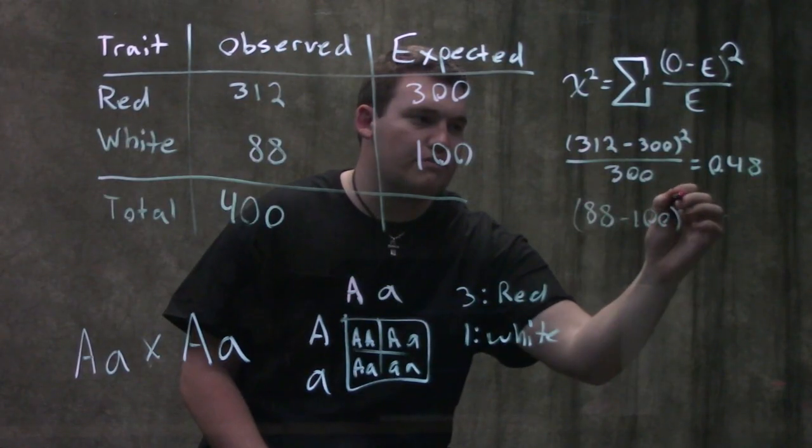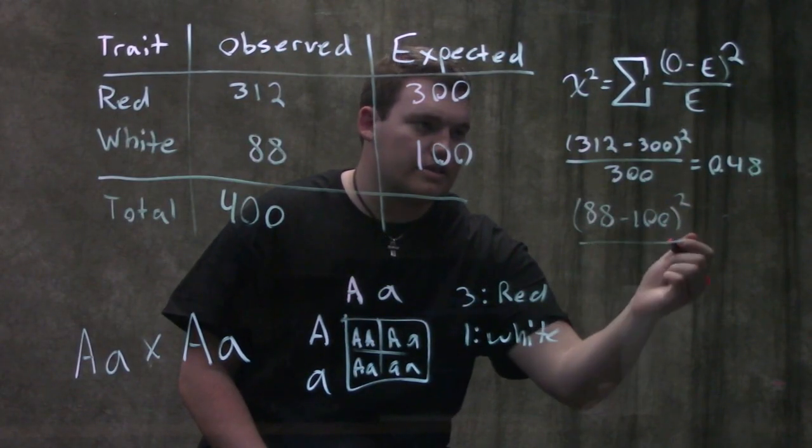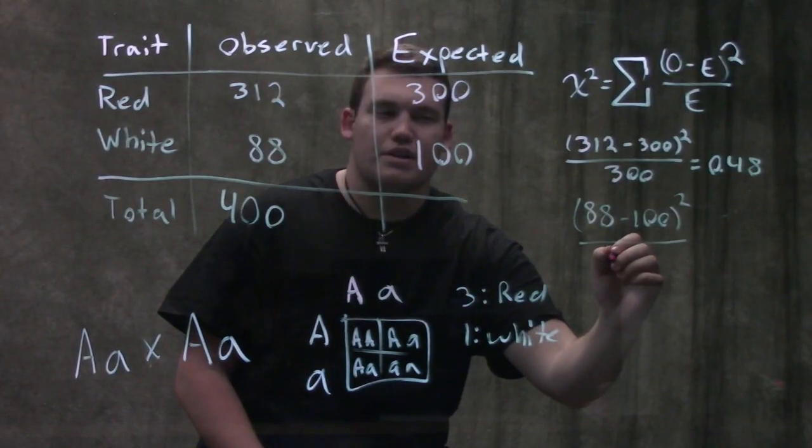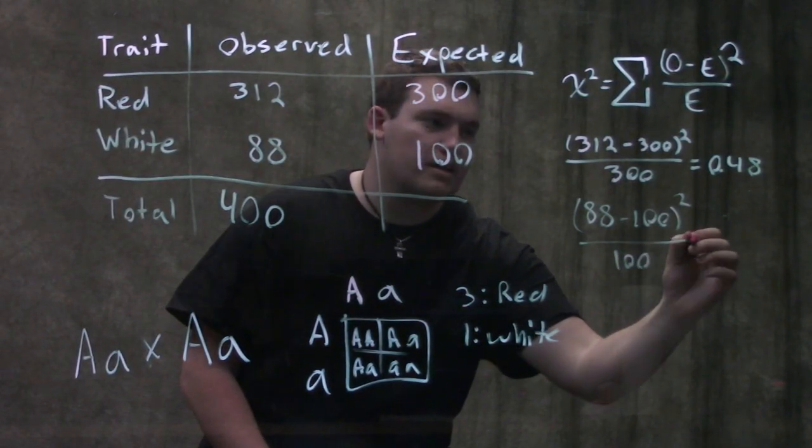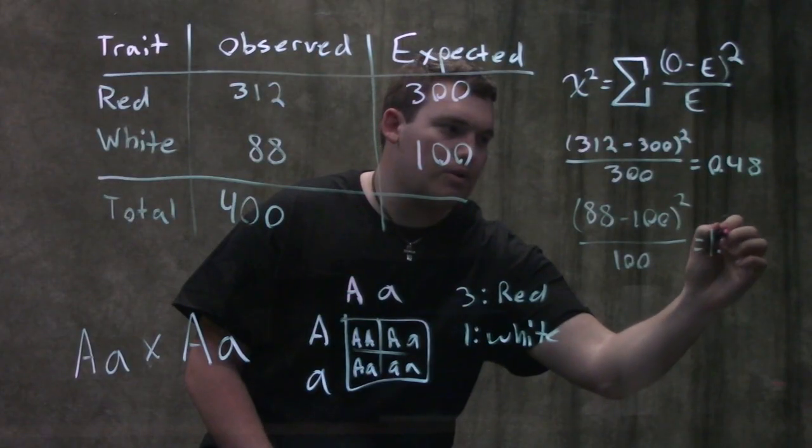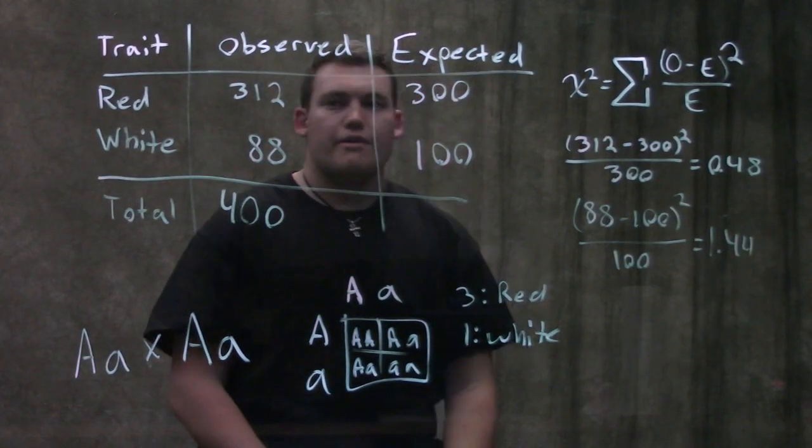So what we're gonna do here is we're gonna take 88 minus 100 and notice how you square it so you should never end up with a negative number. Negative number squared is a positive number and we're gonna divide by our expected and this is gonna give us 1.44.